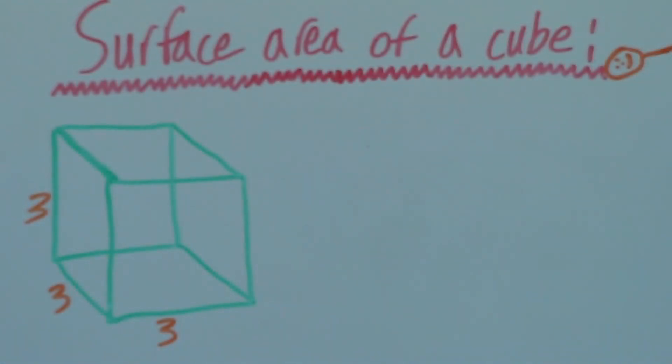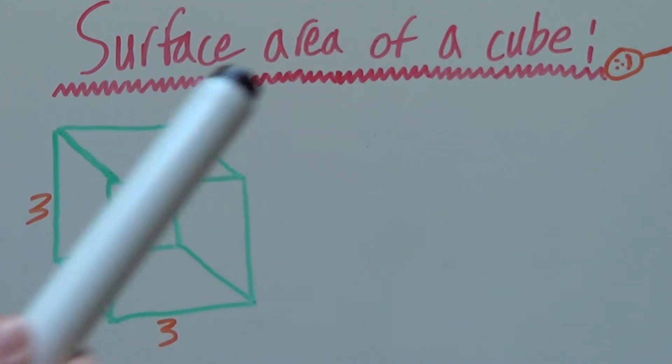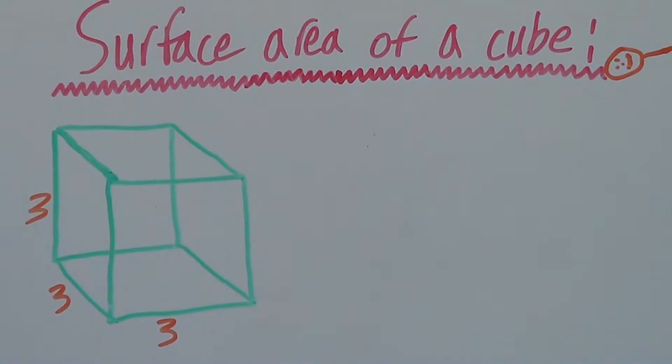Before we get started, let's just review what surface area is. Surface area is the area of a surface of an object.